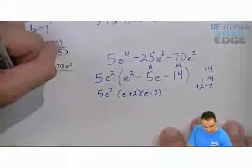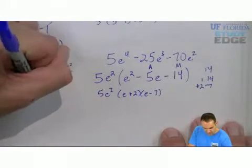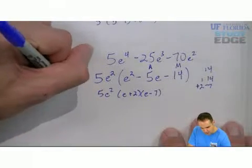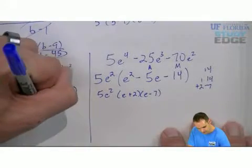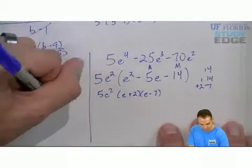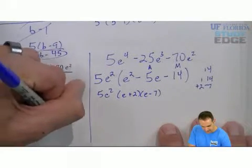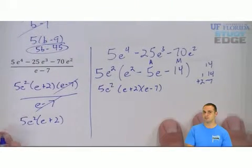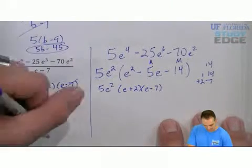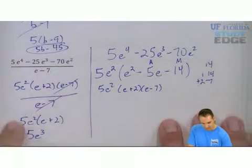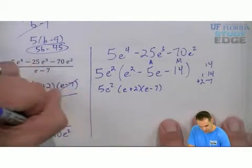Kind of nice, right? So we rewrite the numerator as 5e², e plus 2, e minus 7. The e minus 7s simplify. If you don't see 5e² times e plus 2, then you need to distribute. 5e² times e is 5e³. 5e² times 2 is 10e².